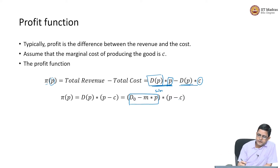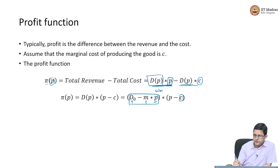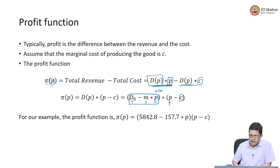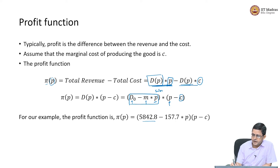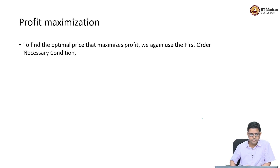We are trying to find the optimal price. I do not know the price I am going to charge, but I do know the market size D₀, I know the slope M — how demand changes with respect to price — and I know the marginal cost C, because that is the cost I am going to incur to produce each product. For our numerical example, D₀ was 5842.8, slope M was 157, and let us put some value for C — the marginal cost.